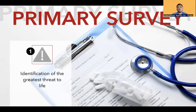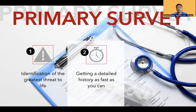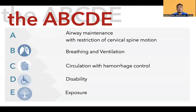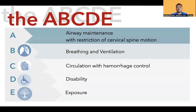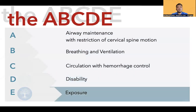Primary survey: the ultimate goal is to identify the greatest threat to life. Even without a detailed history, as long as you obtain a short but precise history as fast as possible. Once you have identified the greatest threat to life, give the needed treatment as early as possible, even without a definitive diagnosis. The ABCDE of primary survey: Airway maintenance with restriction of cervical motion, Breathing and ventilation, Circulation with hemorrhage control, Disability, and Exposure.